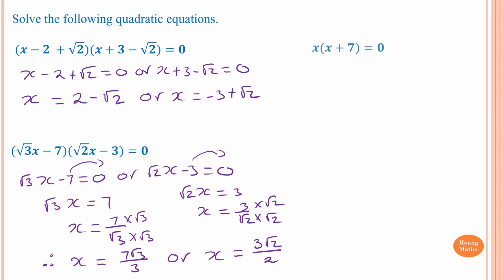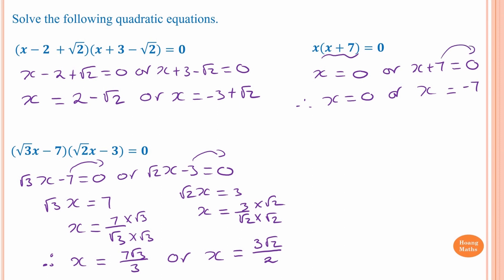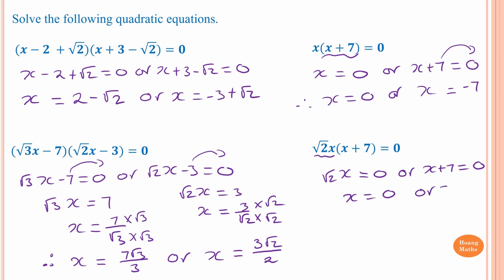Next one: x times x plus seven equals zero. So x equals zero or x plus seven equals zero. Solving the second gives x equals negative seven. Therefore x equals zero or x equals negative seven.